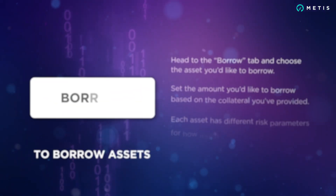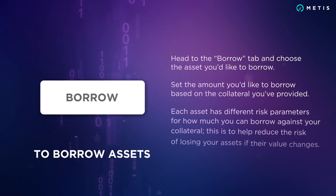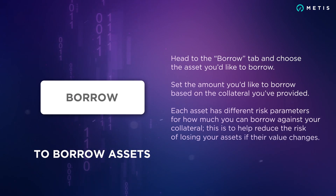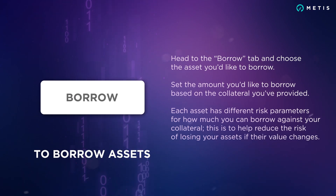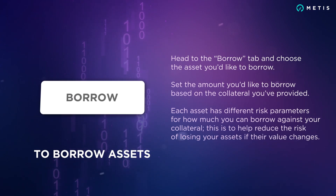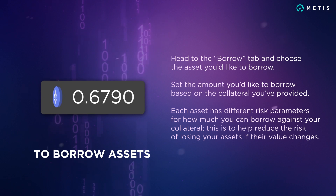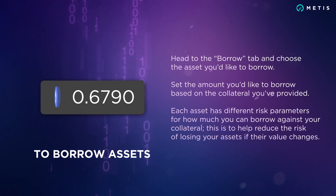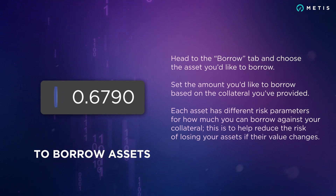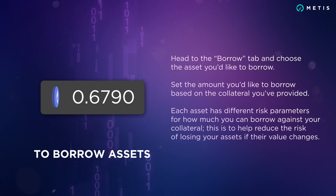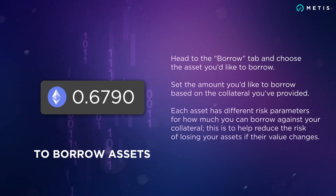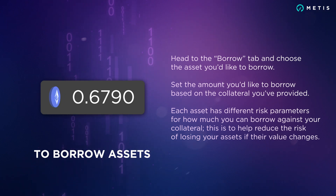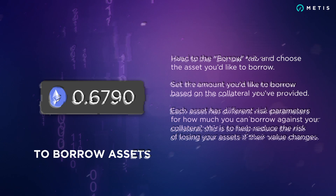To borrow assets, head to the Borrow tab and choose the asset you'd like to borrow. Set the amount you'd like to borrow based on the collateral you've provided. Each asset has different risk parameters for how much you can borrow against your collateral, to help reduce the risk of losing your assets if their value changes.